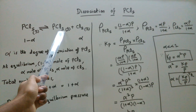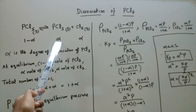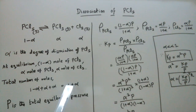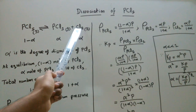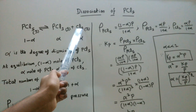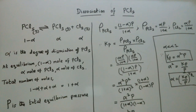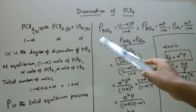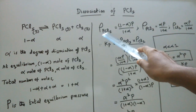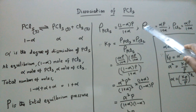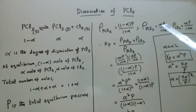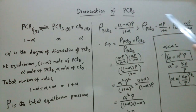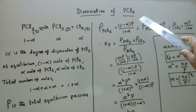The partial pressure of PCl₃ is alpha times P divided by (1 plus alpha). The partial pressure of Cl₂ is alpha times P divided by (1 plus alpha). So we now have all three partial pressure values ready to substitute into the Kp expression.